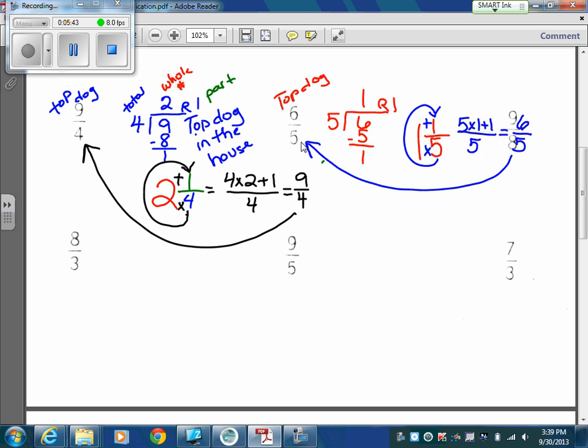Okay, do one more. Just pause the video, try it on your own. Let's do eight thirds, then come back and check with me. Okay, so eight thirds. We're going to start with our top dog, and he's going to go in the house. Divisor is three from our bottom number for denominator. Divide it, goes in twice. Remainder two, which tells me my next number is two and two thirds.